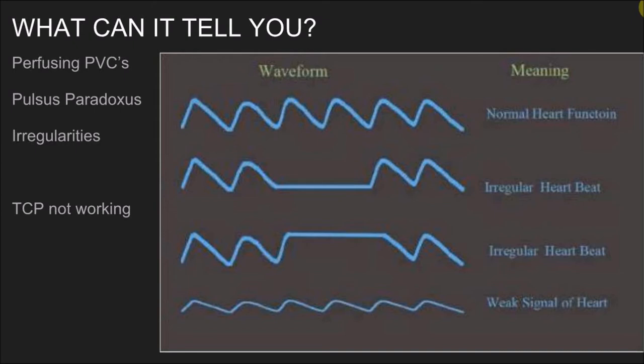Pleth can show other irregularities, like irregular heartbeats, and again it can show when your transcutaneous pacing is beginning to lose mechanical capture — whether you need to dial up the voltage or not. One way I like to think of pleth is like an instant blood pressure, which is something I've always wished I could have.